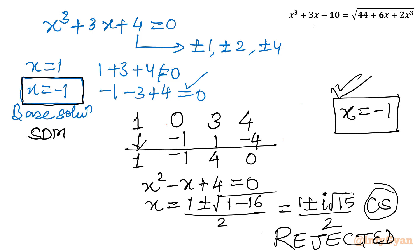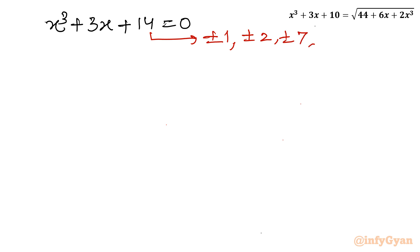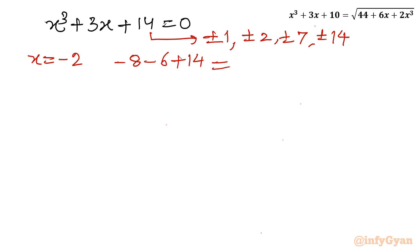Now let's consider the second equation: x³ + 3x + 14 = 0. Again using the rational root theorem, the eligible factors are ±2, ±7, ±14. Positive values won't satisfy it, so let me try x = −2: (−2)³ − 6 + 14 = −8 − 6 + 14 = 0 — yes, that is true. So we will consider −2 as the base solution.